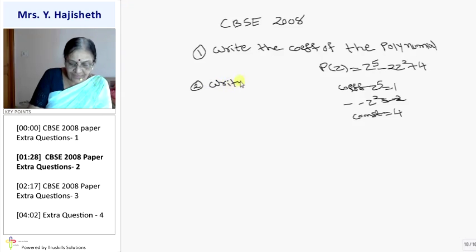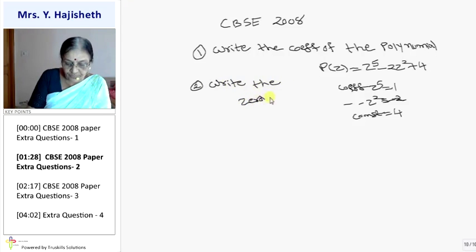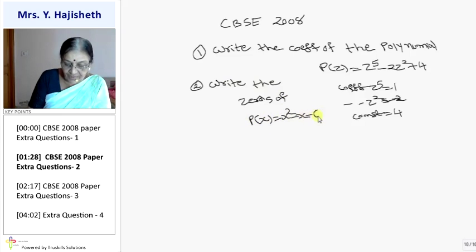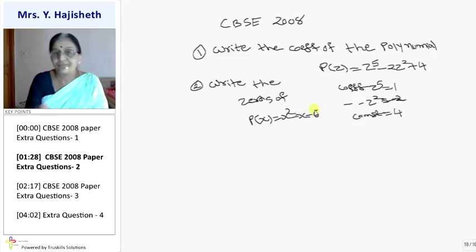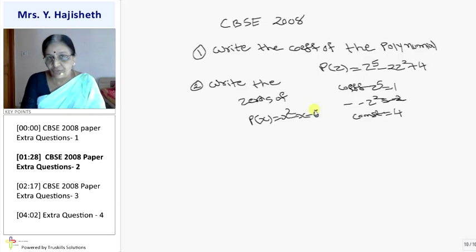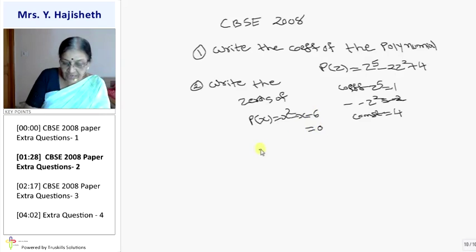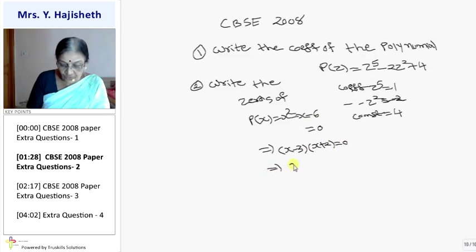The second sum asks: write the zeros of the polynomial. If you are not clear on the meaning of zeros, you won't be able to attempt this. No theory will be asked directly, but questions based on theory will be asked. To find zeros, equate the polynomial with 0 and do factorization. Two factors are (x minus 3) and (x plus 2). Equate with 0: x is 3 or x is minus 2.